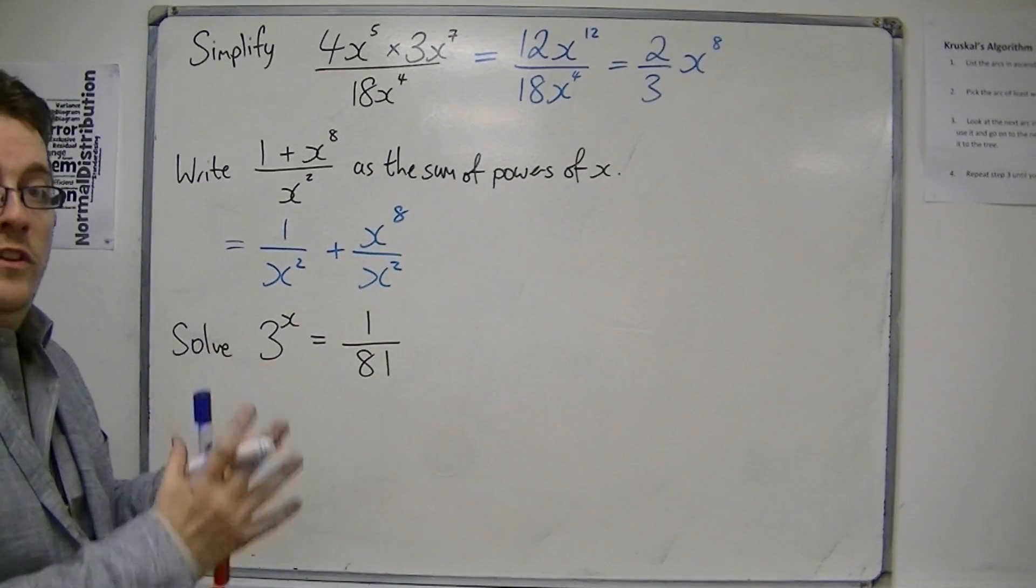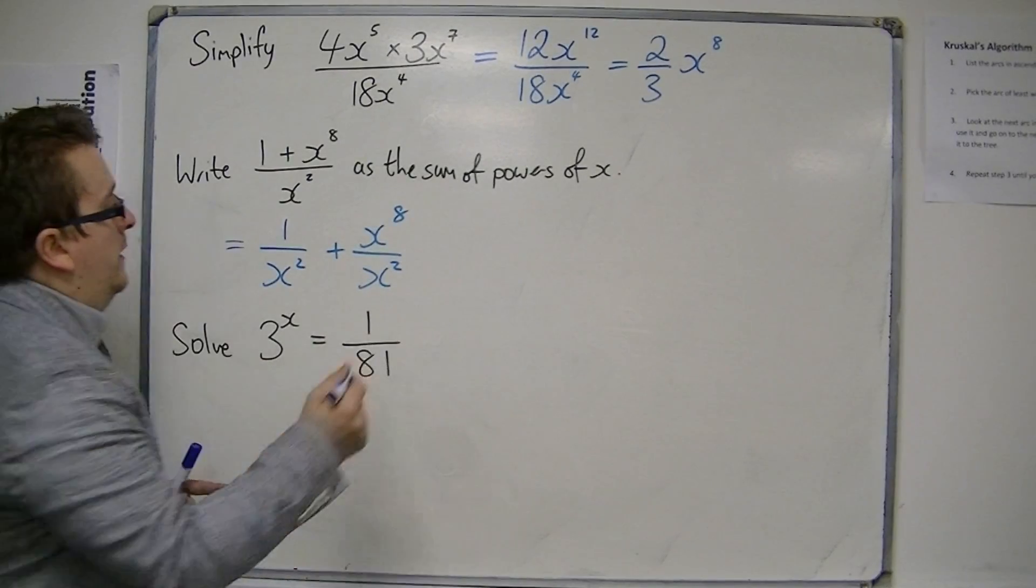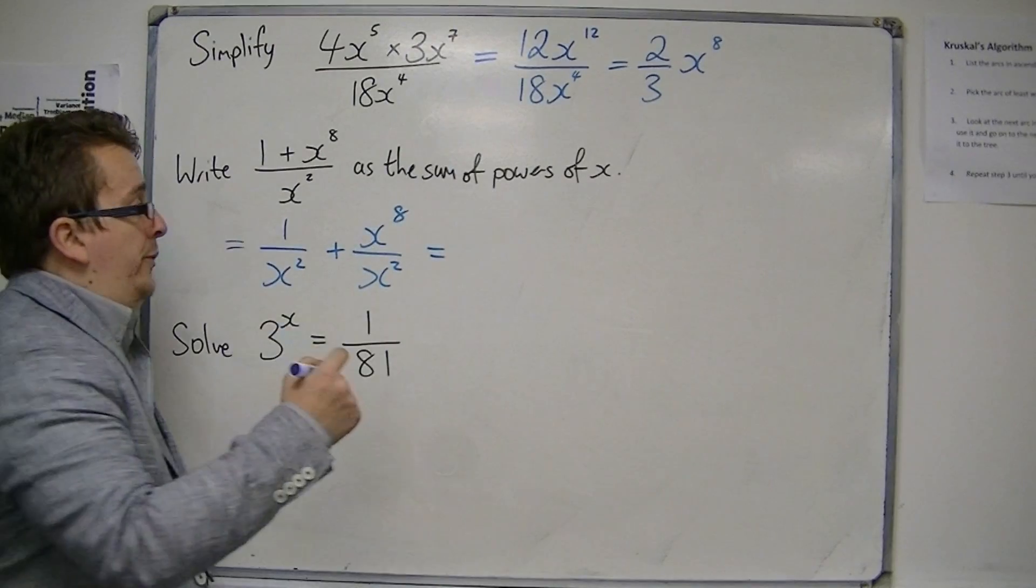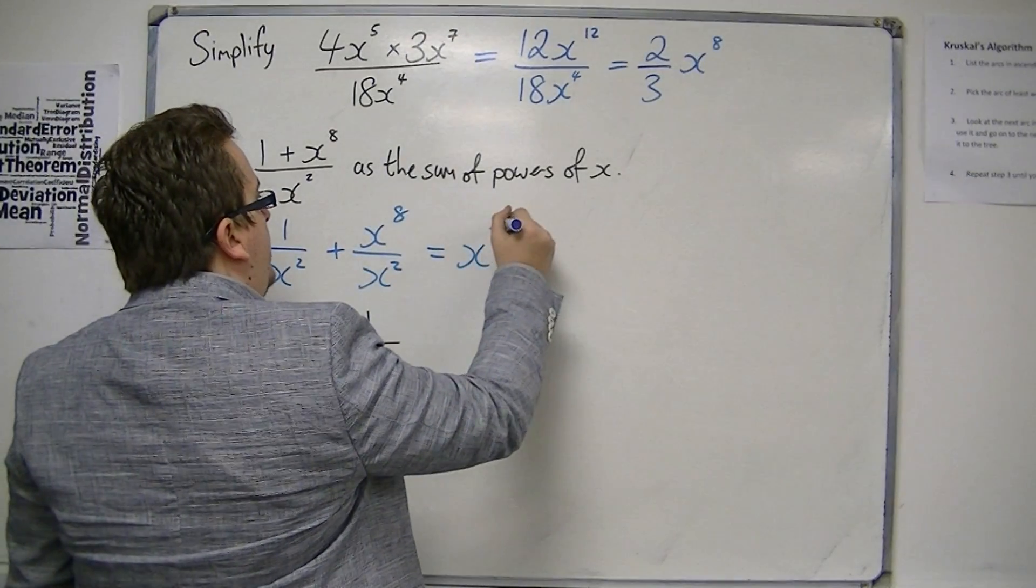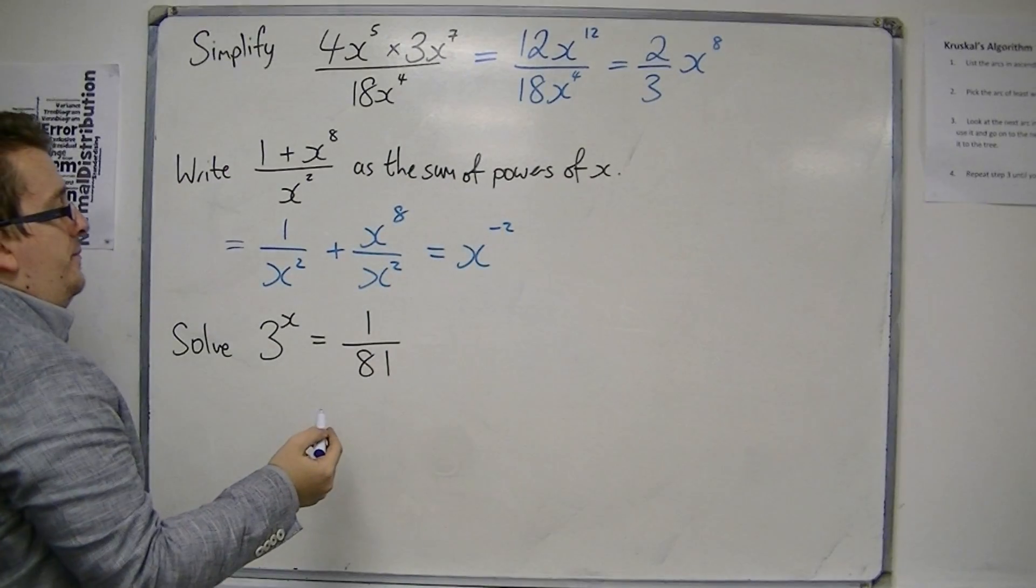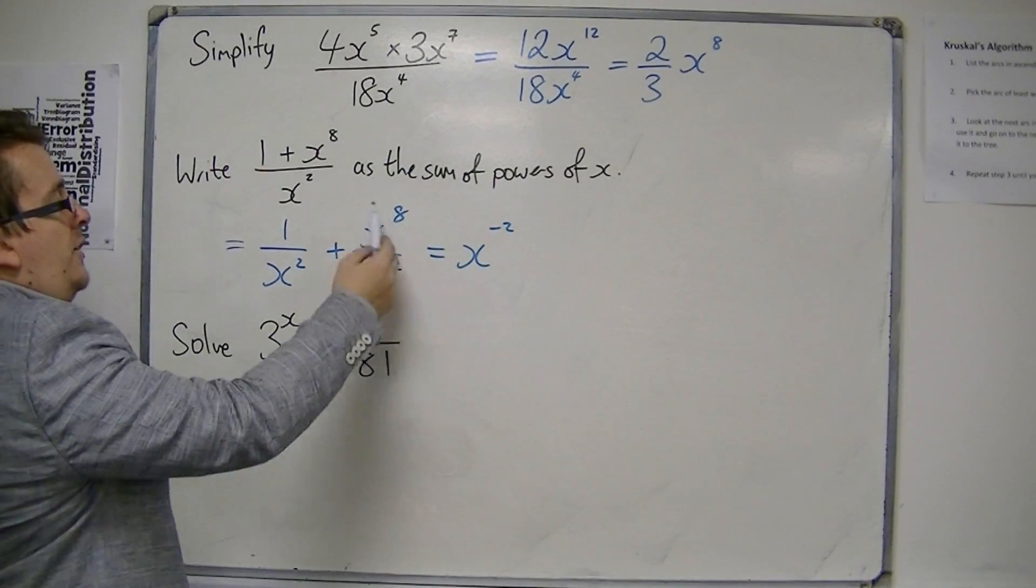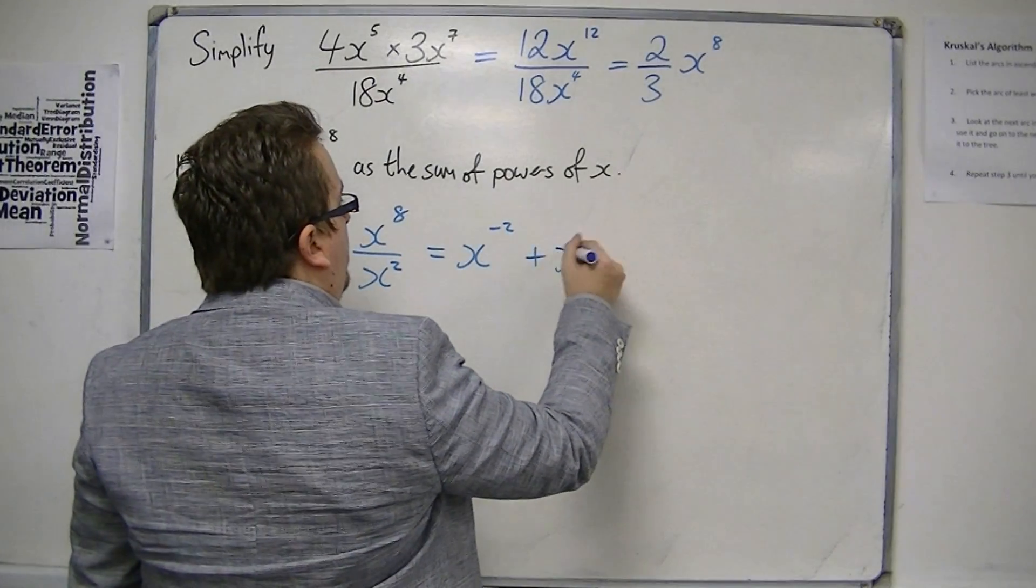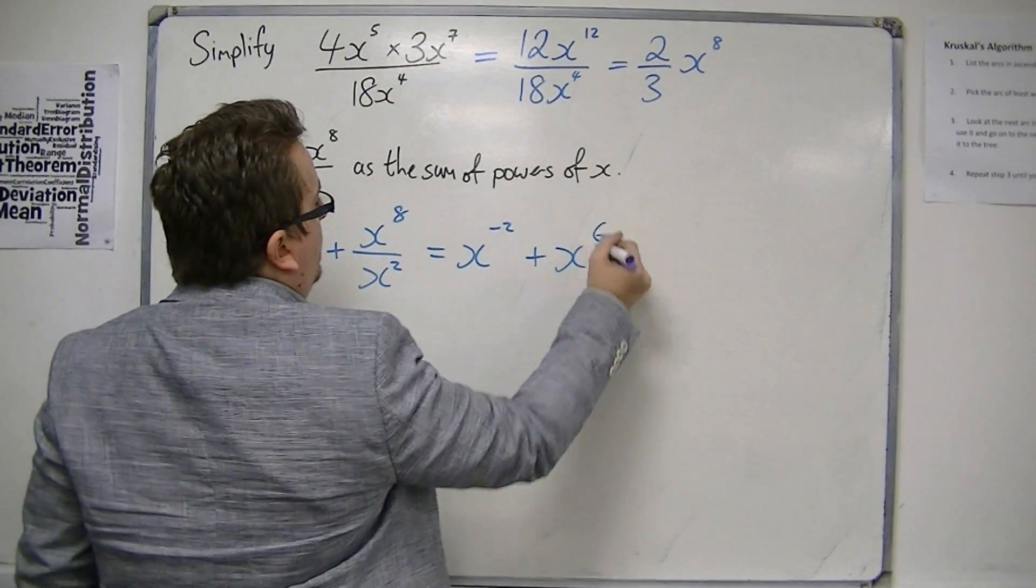So you can split the fraction into two pieces. 1 over x squared, we know using our rules, is x to the minus 2, because the negative means 1 over. And you also have x to the 8 divided by x to the 2, which would be x to the 8 take away 2, so x to the 6.